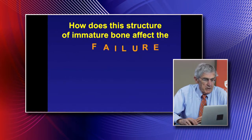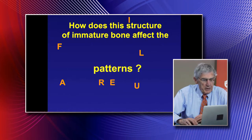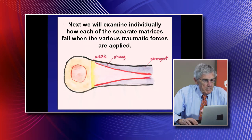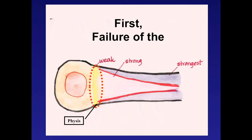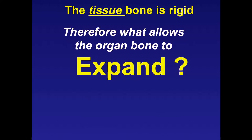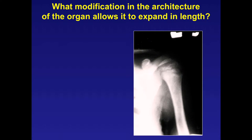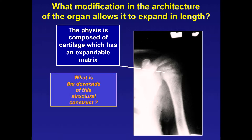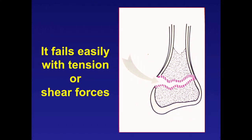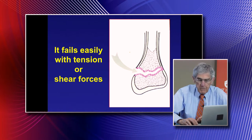How does this structure affect failure patterns? The pediatric skeleton has unique failure patterns. We'll go through each: the physis, metaphysis, and diaphysis. Regarding failure of the physis—bone tissue is rigid, but the physis has expansile cartilage allowing growth. The downside is it's weaker. So it can fail in tension or shear forces. Often in children, failure will occur through the weaker physis, which we don't see in the adult.